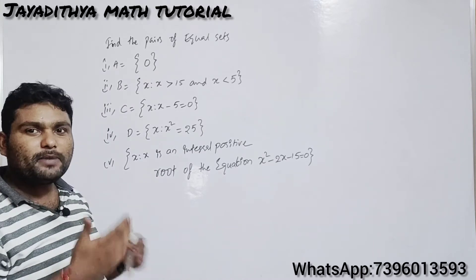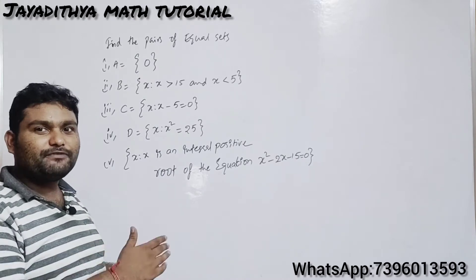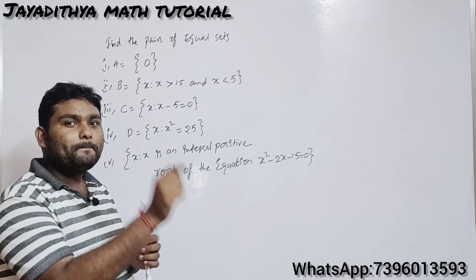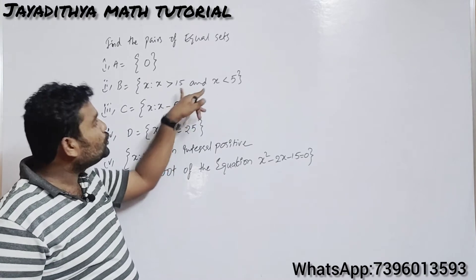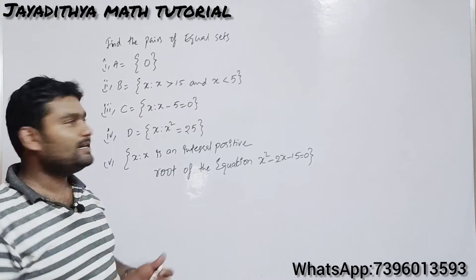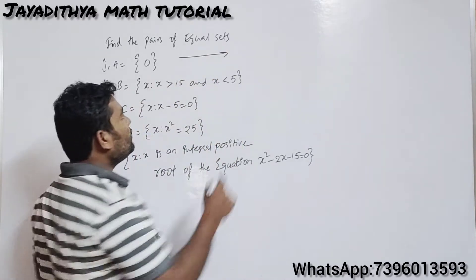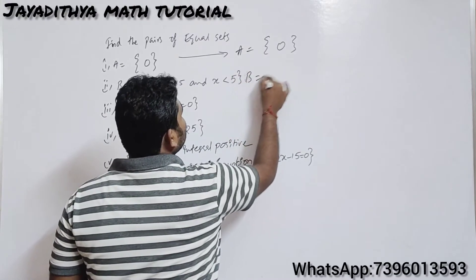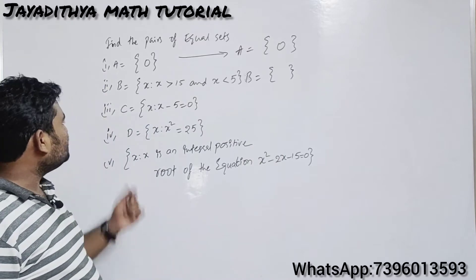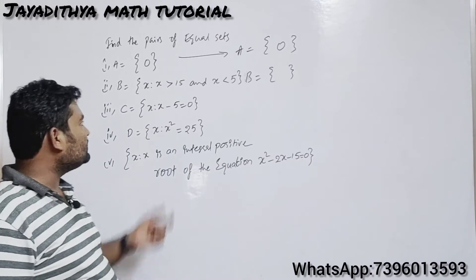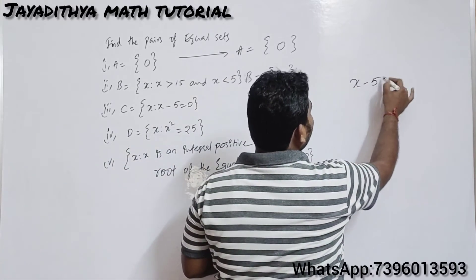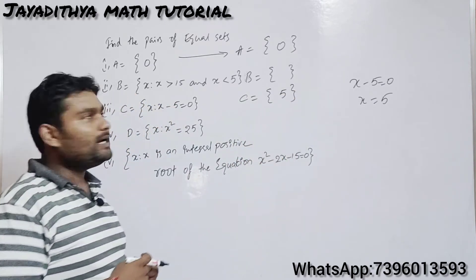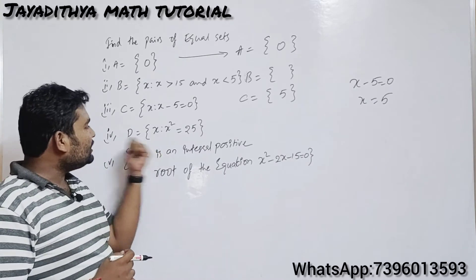Any single number cannot be simultaneously less than 5 and greater than 15 — for example, 1 is less than 5 but not greater than 15, and 16 is greater than 15 but not less than 5. So set B is a null set. Set C = {x : x − 5 = 0}. Simplifying, x = 5, so set C in roster form is {5} — only one element.